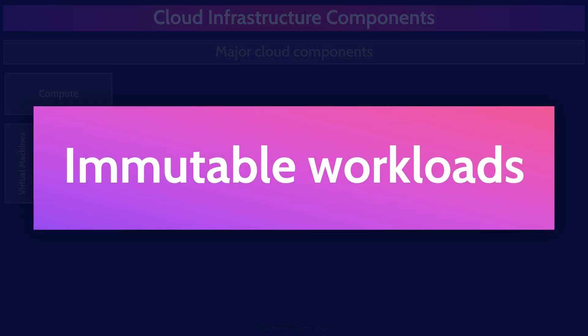The final piece related to compute is immutable workloads. The core idea is in the name — immutable means unchanging over time or unable to be changed. You create workloads — virtual machines, containers, microservices — where the underlying environment, configuration, and application code cannot be changed once deployed. This makes them more secure and reliable. Since the environment doesn't change, it's easier to reproduce and debug issues as each instance behaves exactly the same way. Immutable workloads reduce configuration drift, where environments become inconsistent due to ad hoc changes. With no modifications allowed after deployment, they minimize the risk of unauthorized changes or configurations that would introduce vulnerabilities.